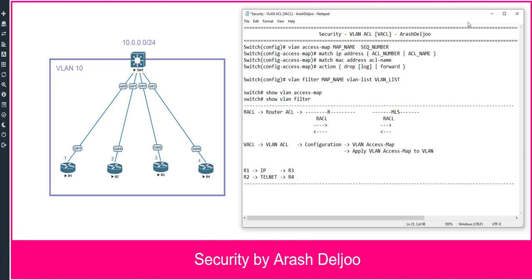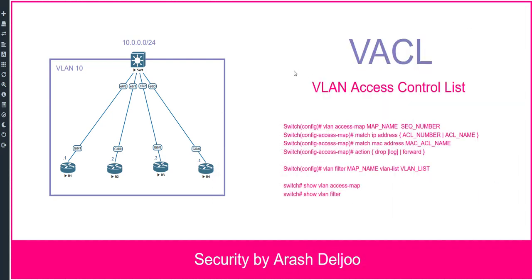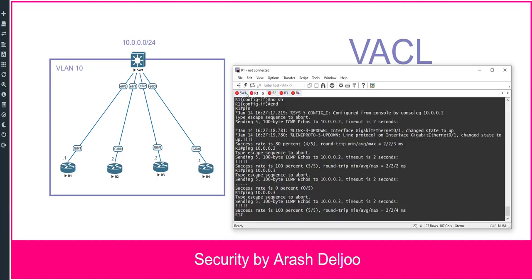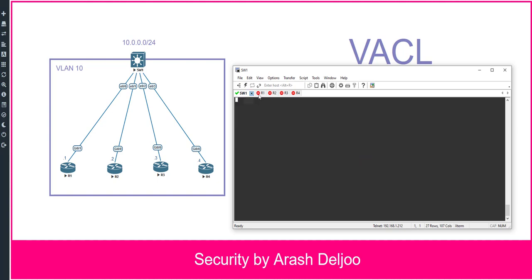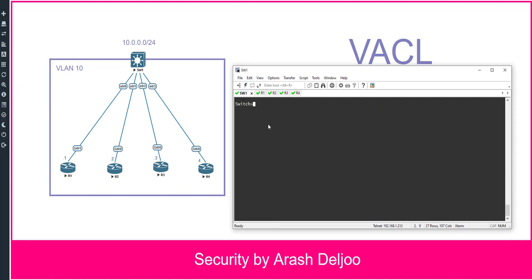Before configuring VACL, we should first configure the scenario. In each security scenario, you should first have connectivity between all devices and then configure the objectives. Here we have Switch 1, Router 1, Router 2, Router 3, and Router 4. Currently Switch 1 has no configuration, and neither do any of the routers.